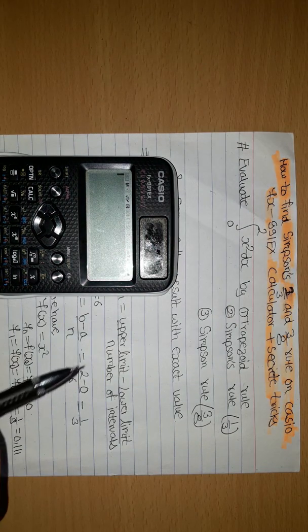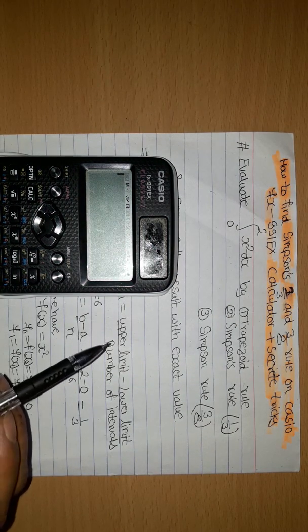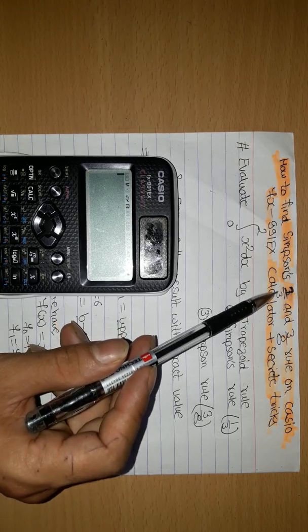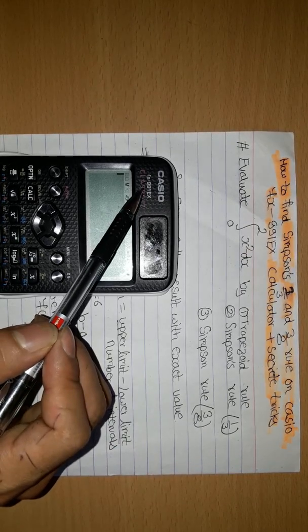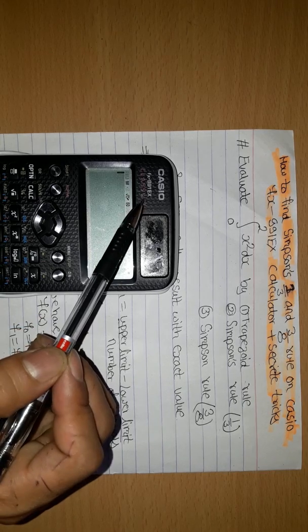Hello my dear friend, I am Parveen. Today I will tell you how to find Simpson 1 by 3rd and 3 by 8 rule on Casio fx-991EX calculator plus secret trick.